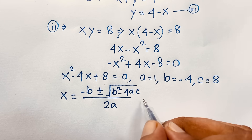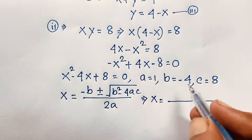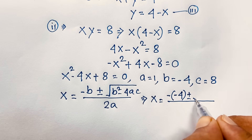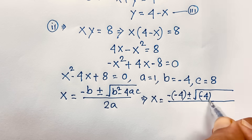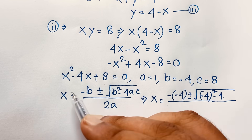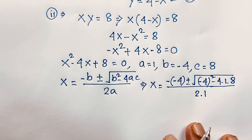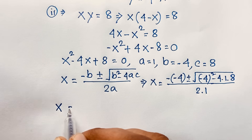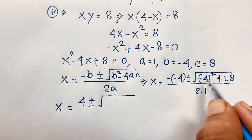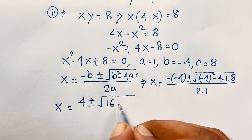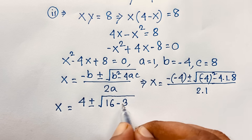I apply this formula here. So x is equal to minus b — b is equal to negative 4, so minus b is positive 4 — plus or minus square root of b squared, which is minus 4 whole squared, minus 4ac. a is 1 and c is 8, over 2a where a is 1. So we have 4 plus or minus square root of 16 minus 4 times 1 times 8, which is 32, all over 2.